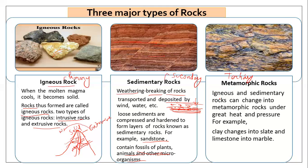Next are metamorphic rocks. Sedimentary rocks can change into metamorphic rocks under great heat and pressure. Because of heat and pressure, a rock can change into another form — this is called metamorphic rock or 'Rupanthra shell.' For example, clay can be changed into slate, and limestone can be changed into marble.